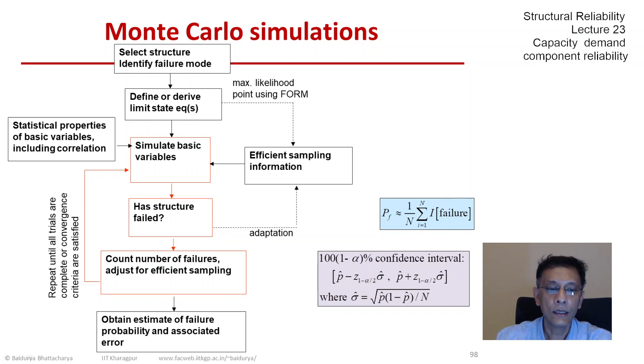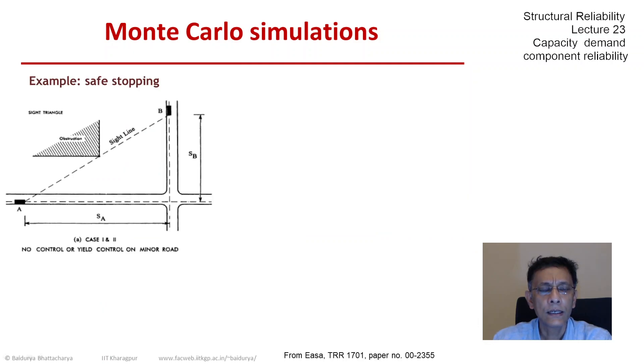The first one would be the safe stopping problem that we solved earlier in this course. So here is the problem statement. We have a vehicle travelling at a certain speed on a road and it must be able to stop within the distance provided.